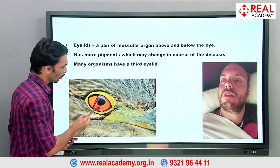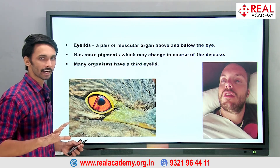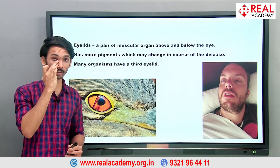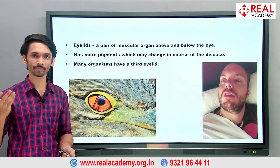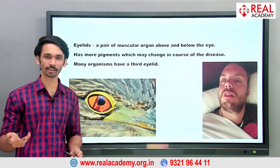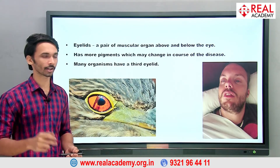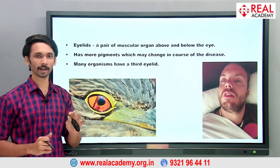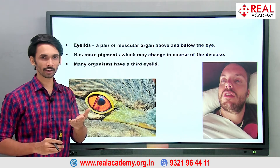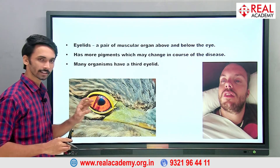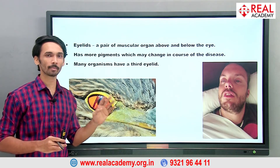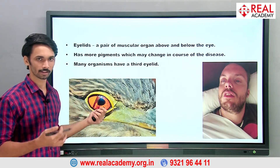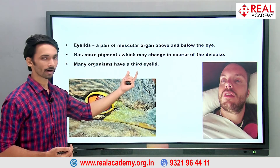We don't have a nictitating membrane. We can see the pink-colored vestigial remnant in humans, but we lost the functional nictitating membrane through evolution. Animals like eagles and crocodiles have it. Even a spitting cobra spits venom — an eagle can protect its eyes with the nictitating membrane, but a human standing in front of a spitting cobra would be completely blinded, as we lack that protection.